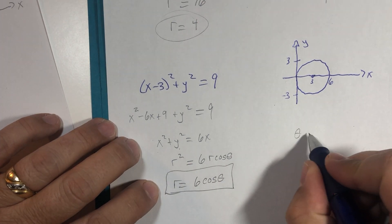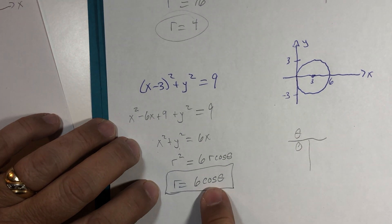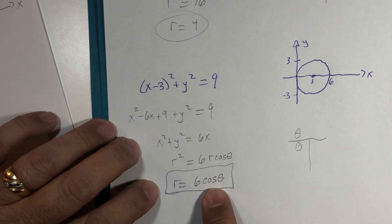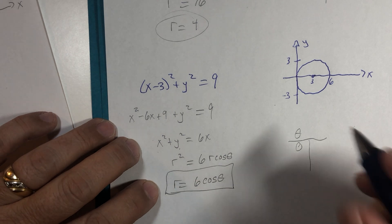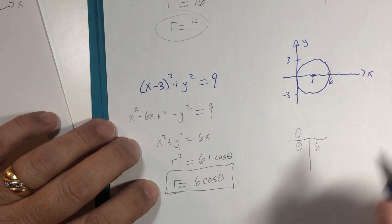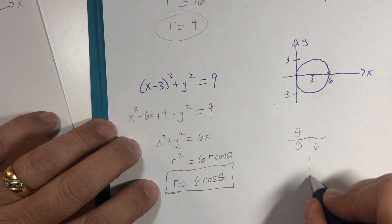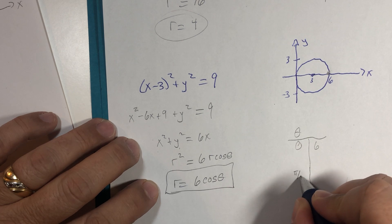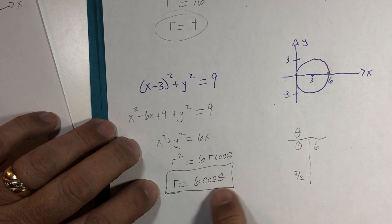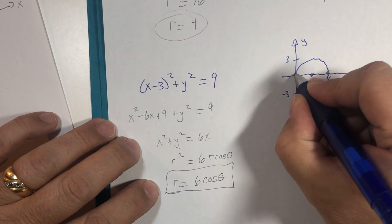But if theta is 0, cosine of 0 is 1, and 1 times 6 is 6, that would be representing this point here. If theta is pi divided by 2, cosine of pi over 2 is 0, 0 times 6 is 0, that would be this point right here.